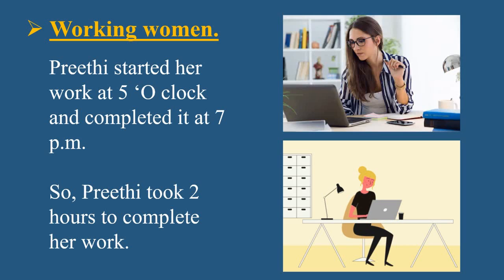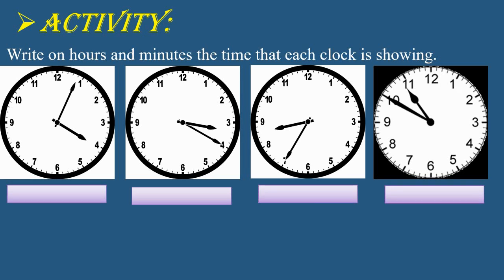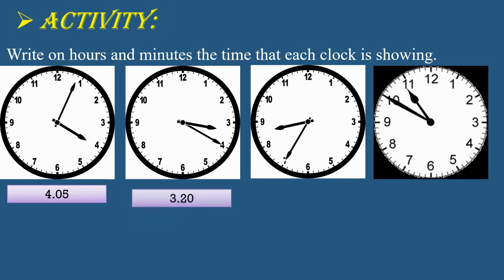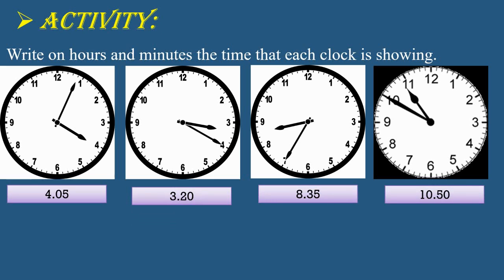Here is activity time. So students, what you have to do is take out your notebook, draw the clock in your book, and identify the time. Write on hours and minutes the time that each clock is showing. The short hand is the hour hand and the long hand is the minute hand. Identify the time for each and every clock, write it, and post it in your WhatsApp group. Here are the answers — you have to not copy, but check whether your answer is correct.